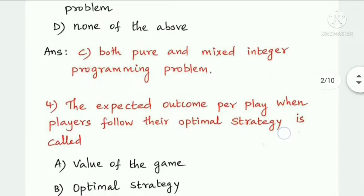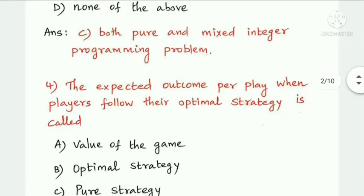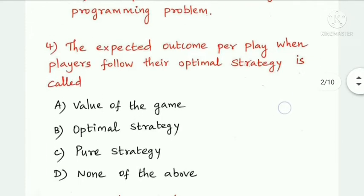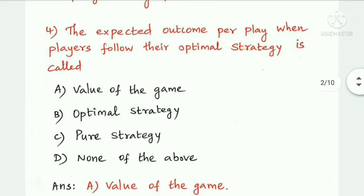Next question: the expected outcome per play when players follow their optimal strategy is called — value of the game, optimal strategy, pure strategy, or none of the above. Option A is the answer: value of the game.